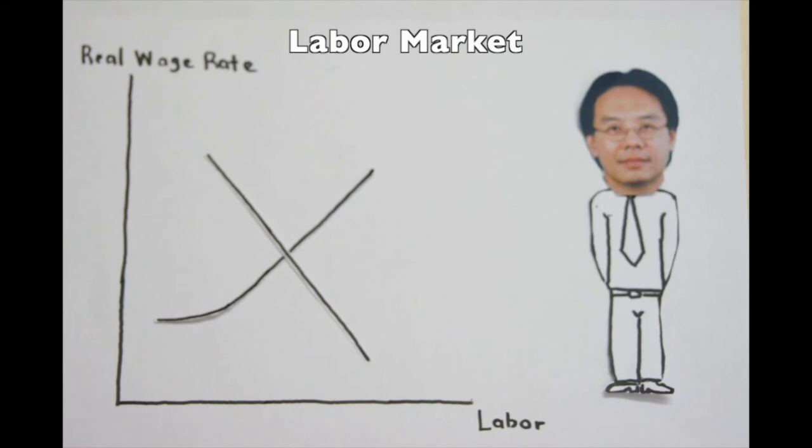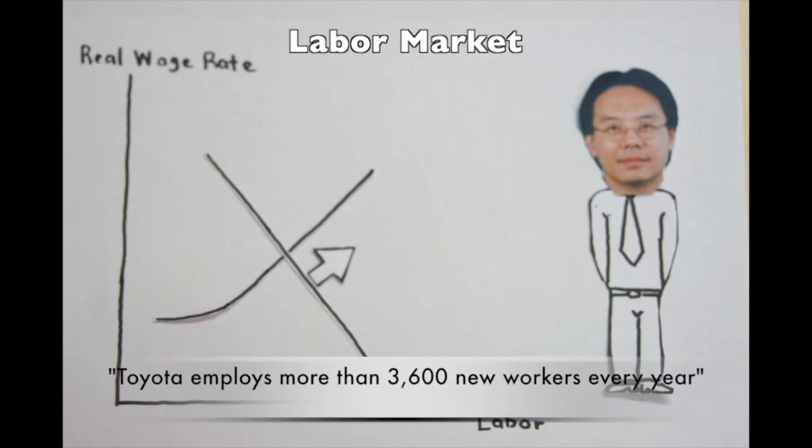If labor is more productive, firms are willing to pay more for additional labor, which increases the demand for labor. With an increase in the demand for labor and no change in the supply of labor, the real wage rate rises, and the quantity of labor supply increases.